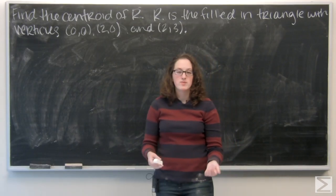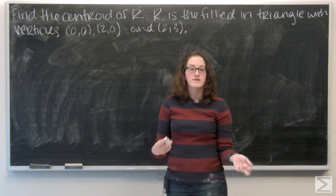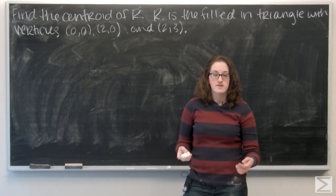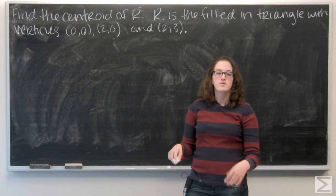Okay, so in this problem I'm given a region and I'm asked to find the centroid of that region. Here R is the filled in triangle with vertices 0, 0, 2, 0, and 2, 3.